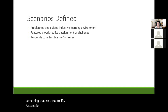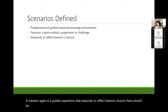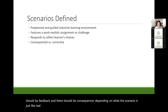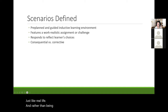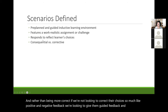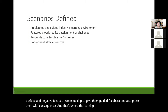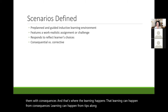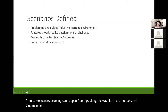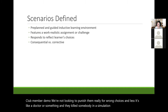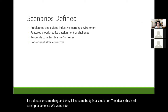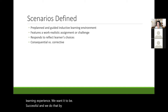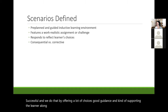A scenario is a guided experience that responds to reflect learners' choices. There should be feedback and there should be consequences depending on what the scenario is, just like real life. Rather than being purely corrective, we're looking to give guided feedback and present consequences — that's where the learning happens. Learning can happen from consequences, from tips along the way like in the interpersonal club member demo. We're not looking to punish them for wrong choices. The idea is this is still a learning experience and it is pre-planned and guided.